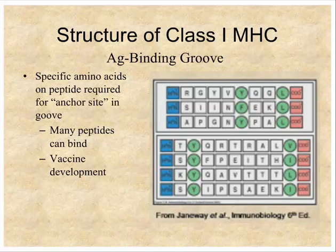Understanding anchor site rules has important implications for vaccine design. If you know the rules for a particular class 1 MHC molecule, you could design a peptide with the correct anchor residues and insert a pathogen-derived sequence in between. Since these peptides are only 8 to 10 amino acids, they are easy to synthesize. There is significant interest in establishing the anchor site rules for each class 1 molecule to develop peptide-based vaccines.